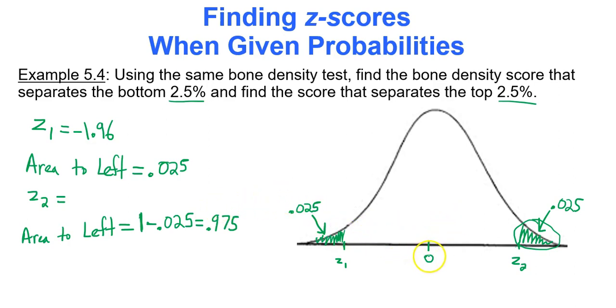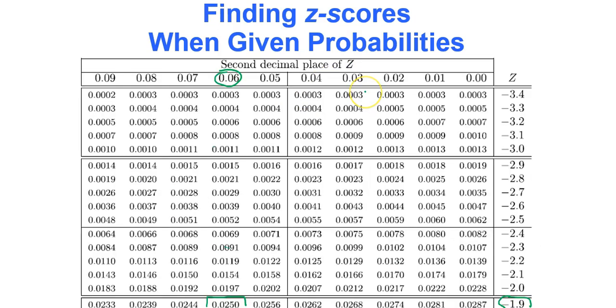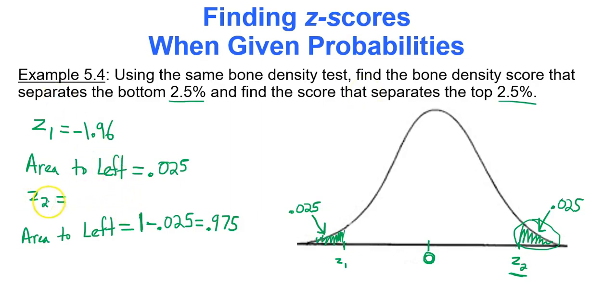Now, using common sense here, my mean of my standard normal distribution is 0, and my z-sub-2 is to the right of 0, so it should be a positive number. So we're going to look at our table of positive values, positive z-scores, and I'm looking for 0.975. So look in the body of the table until you find 0.975. Found it, and that's 1.96. So you found your two data values.